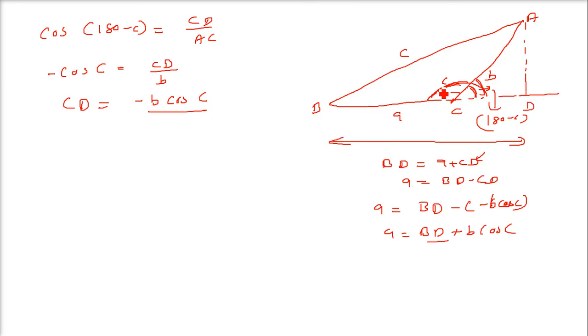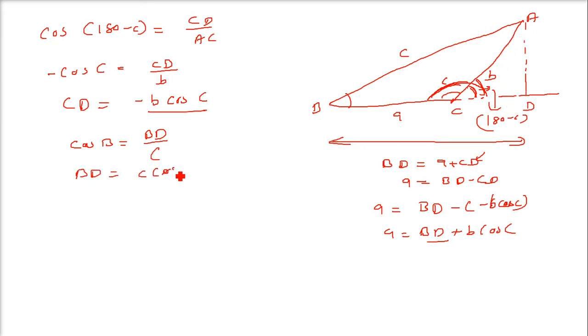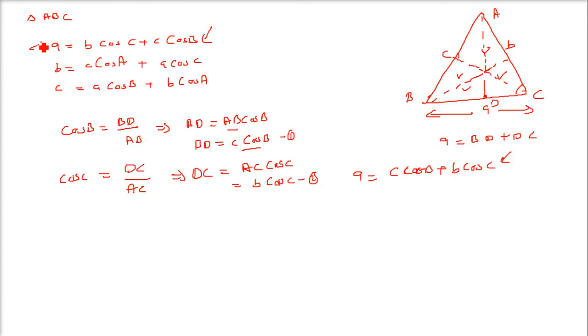BD is nothing but C cosB, because taking angle B, cosB equals BD over hypotenuse C, so BD equals C cosB. Therefore A equals C cosB plus b cosC. This is how we prove it. You can prove the other formulas using the same discussion. So this is the projection formula.